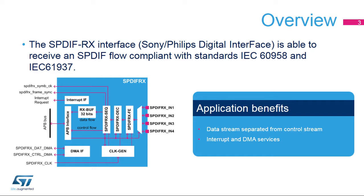The SPDIF-RX needs two peripheral clocks: an APB clock for the register interface accesses, and a kernel clock named SPDIF-CLK used for the resampling and processing of the incoming stream. The receiver part is mainly composed of the SPDIF-FE, which performs the sampling, the filtering, and the edge detection of the incoming stream.